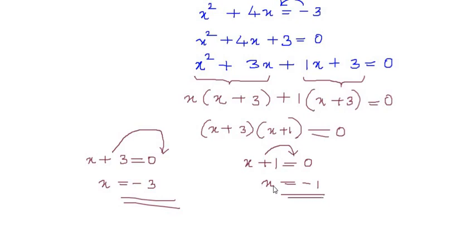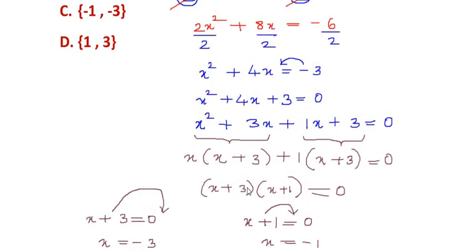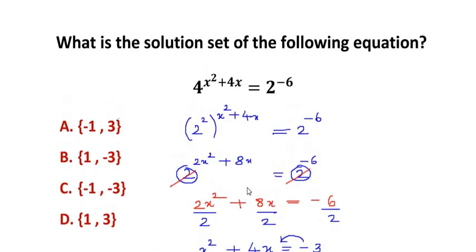So we have negative 1 and negative 3 as two values of x. Let's look at the options. Here we have option C which has negative 1 and negative 3. So this is the solution set for the given equation.